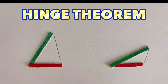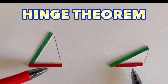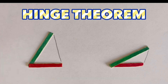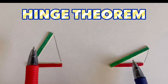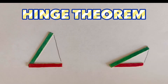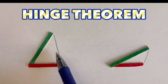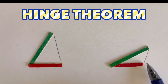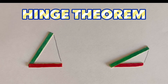Both pairs of sides are congruent but differ in their included angle. The converse is also true: if two triangles have two congruent sides, the one with the longer third side has the larger included angle. The longer side corresponds to the larger angle, and the shorter side to the smaller angle.